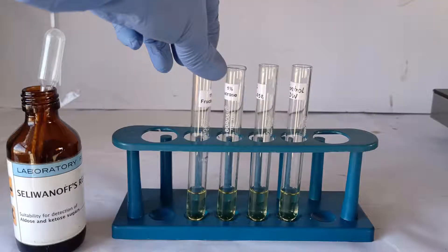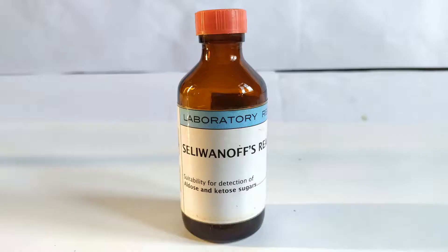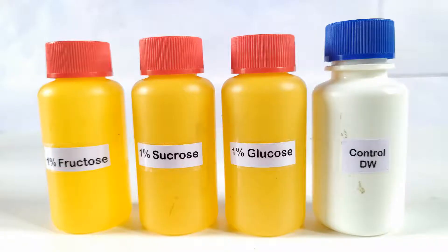In this video, we will be demonstrating a positive and a negative Seliwanoff's test on ketose and aldose sugar samples. For this experiment, we will need the following: Seliwanoff's reagent; sugar samples consisting of a 1% solution of fructose as an example of a ketose monosaccharide; a 1% solution of sucrose as a representative example of disaccharide and polysaccharide sugars containing ketose monosaccharide units; a 1% solution of glucose as an example of an aldose sugar; and finally a control sample of distilled water.